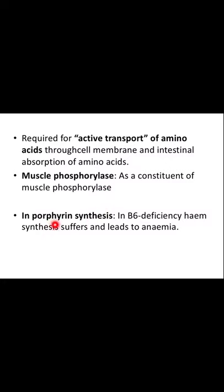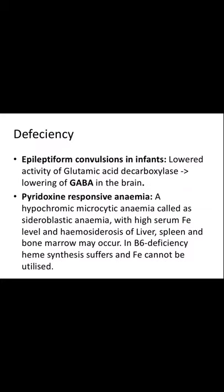In porphyrin synthesis, B6 deficiency causes heme synthesis to suffer and leads to anemia. Porphyrin synthesis is needed for heme synthesis and then for hemoglobin. So if there is a deficiency, it will lead to anemia.